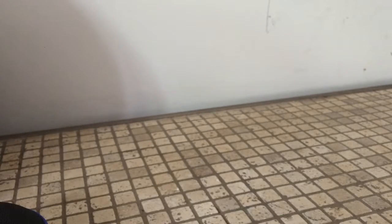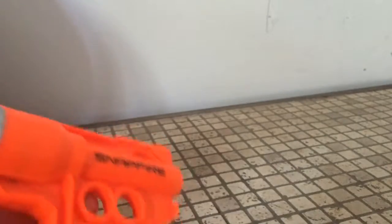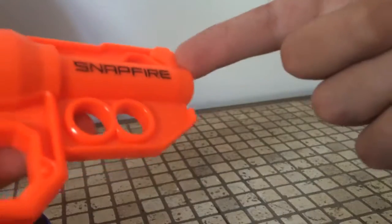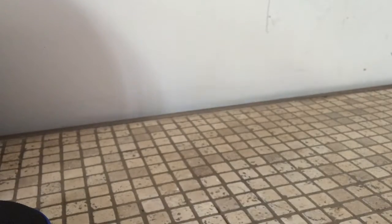I will be doing a modification to the Snapfire as promised and I will take out the air restrictor. The air restrictor is located inside the barrel and it pretty much prevents a dart from firing if it's not all the way in. My air restrictor was jammed so I needed to take it out in order to use the blaster.